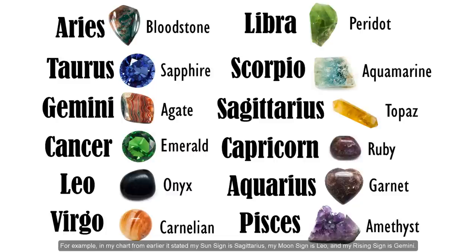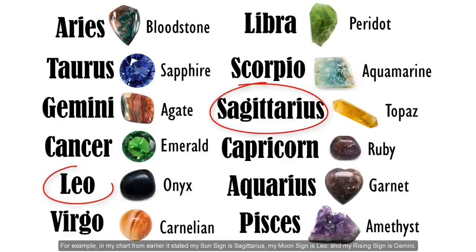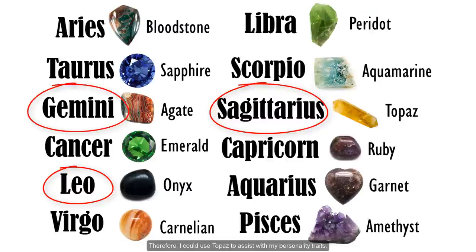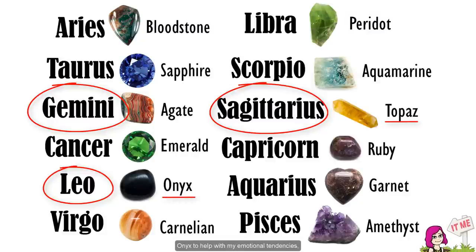For example, in my chart from earlier, it stated my sun sign is Sagittarius, my moon sign is Leo, and my rising sign is Gemini. Therefore, I could use topaz to assist with my personality traits, onyx to help with my emotional tendencies, and agate for my impression on others and how I view the world.